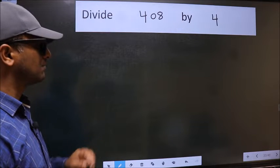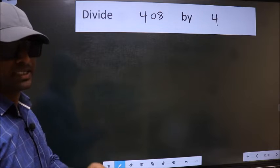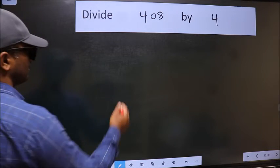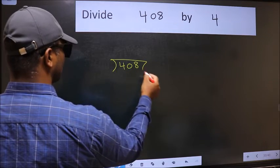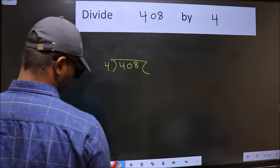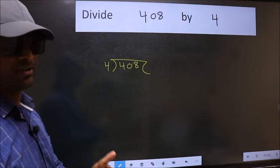Divide 408 by 4. To do this division, we should frame it in this way: 408 and 4 here. This is your step 1.